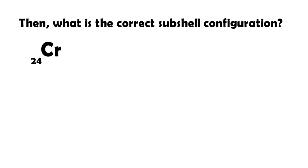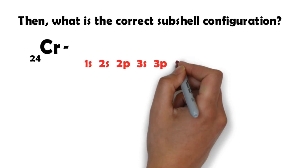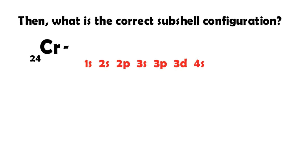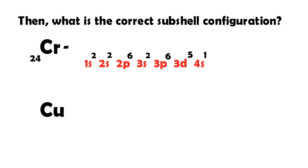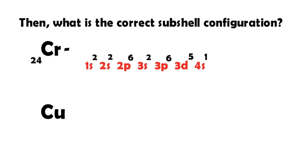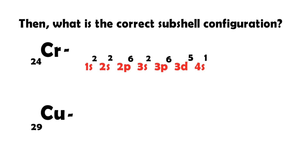Let's check Chromium's actual configuration: 1s2, 2s2, 2p6, 3s2, 3p6, 3d5, 4s1. This is the corrected Chromium configuration.